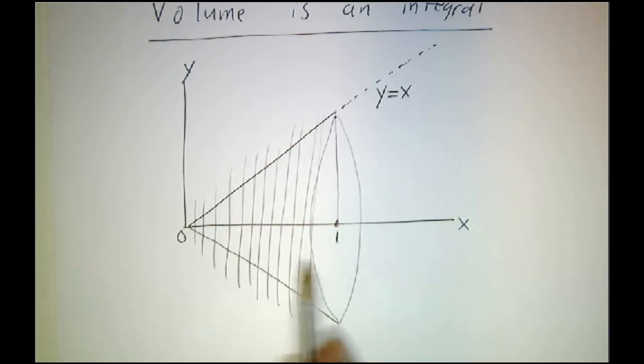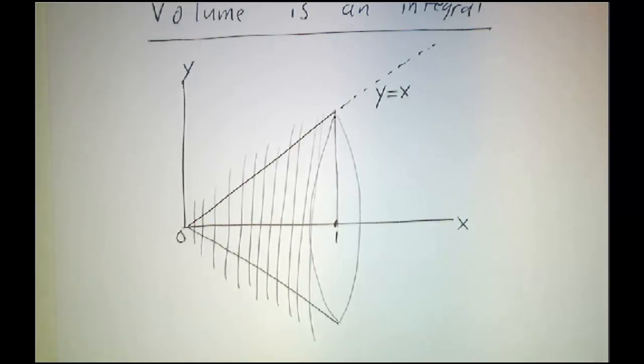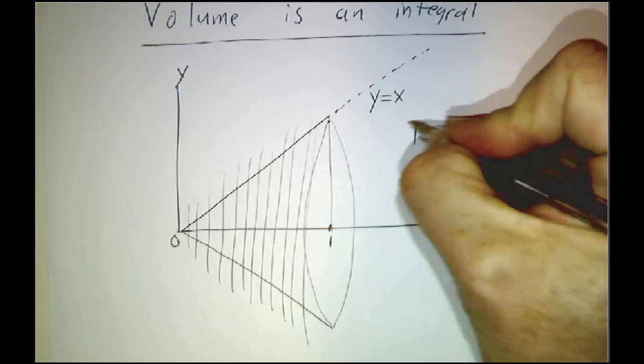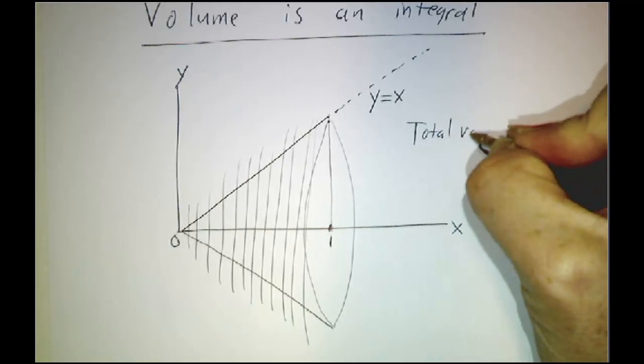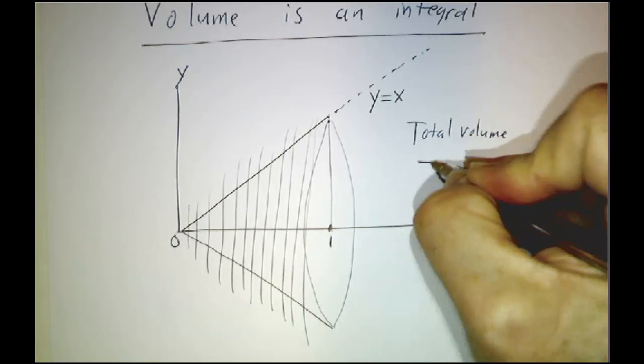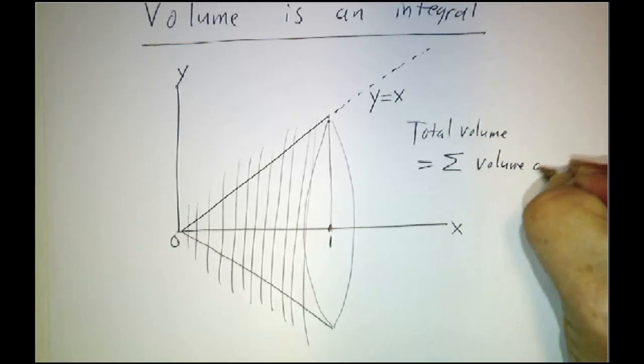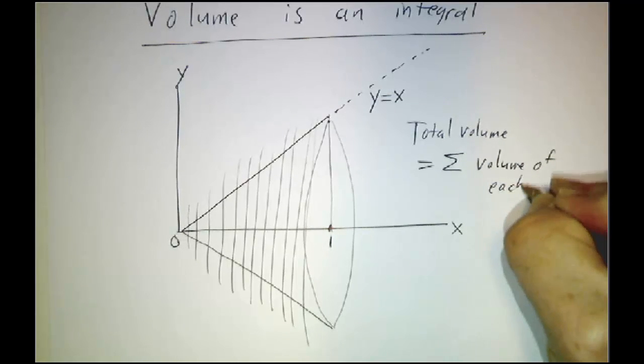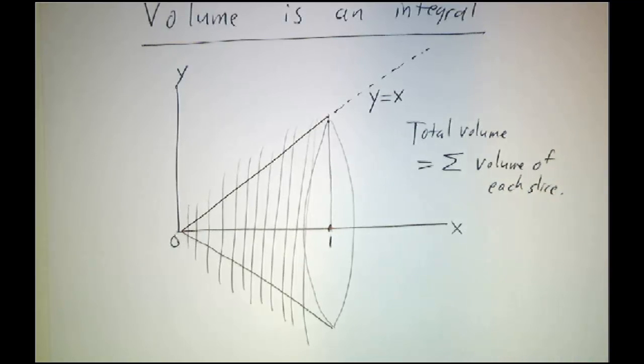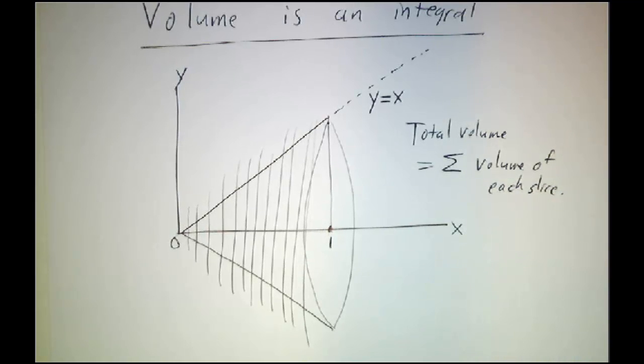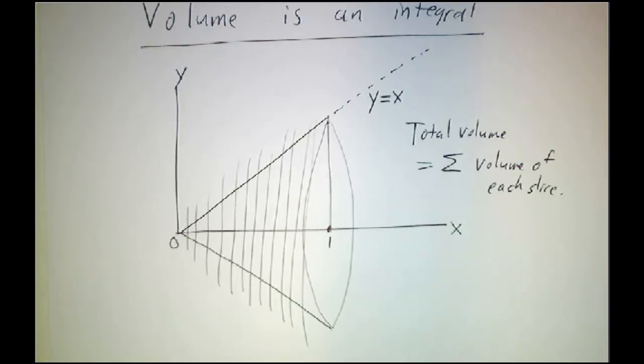And we say that we want the total volume. So the total volume is the sum of the volume of each slice. So if we only had a way to figure out the volume of each slice, we would be able to figure out what the whole volume was.